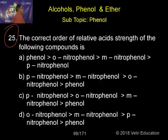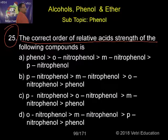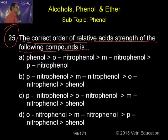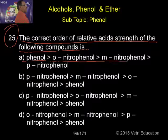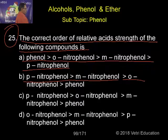Question number 25. The correct order of relative acid strength of the following compounds is: A. Phenol greater than ortho-nitrophenol greater than meta-nitrophenol greater than para-nitrophenol. B. Para-nitrophenol greater than meta-nitrophenol greater than ortho-nitrophenol greater than phenol.